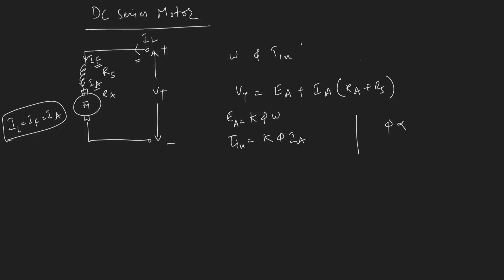Since flux is proportional to the field current IF, and IF equals Ia, we can write flux = C·Ia. The torque induced equation then becomes τ = K·C·Ia², that is, torque is proportional to the square of armature current. This assumes a linear relationship between flux and Ia.